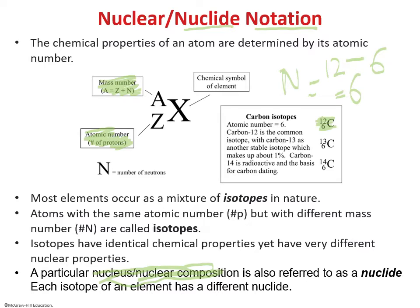For the number of electrons: if the atom has no charge, meaning it is neutral, then the number of electrons equals the number of protons, which is also 6. So we now understand carbon-12.